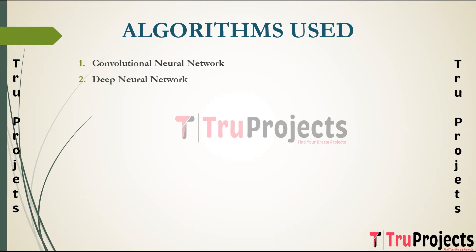The next algorithm is Deep Neural Network (DNN), a neural network with multiple layers including an input layer, one or more hidden layers, and an output layer. DNNs are capable of learning complex patterns and representations from data. In intrusion detection, this allows the model to capture intricate relationships between various network features and potential threats. DNNs facilitate end-to-end learning, enabling the model to automatically discover and represent relevant features without extensive manual feature engineering.